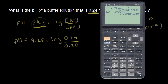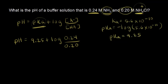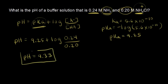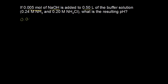So 9.25 plus 0.08 gives us a pH of 9.33 for our buffer solution. Now, we're adding 0.005 moles of sodium hydroxide, and our total volume is 0.50 L. So if we divide moles by liters, that gives us the concentration of sodium hydroxide: 0.005 divided by 0.50 is 0.01 M.